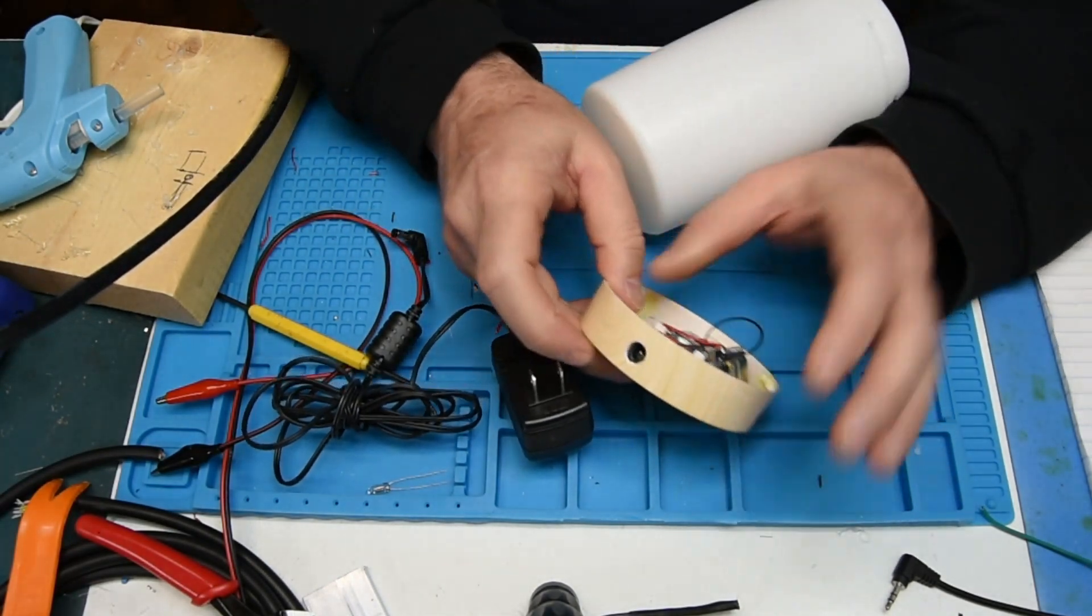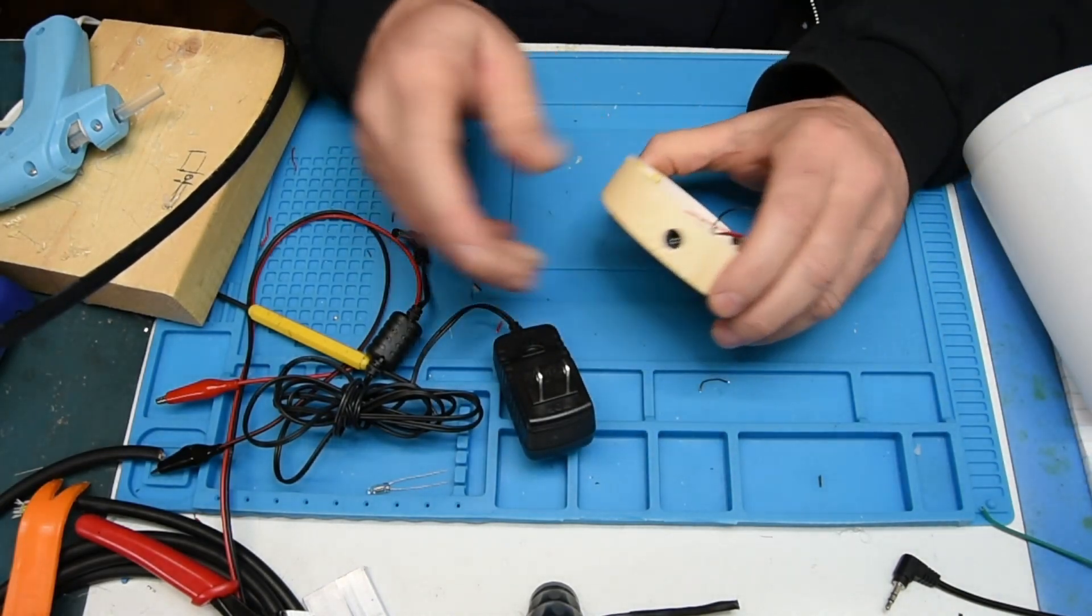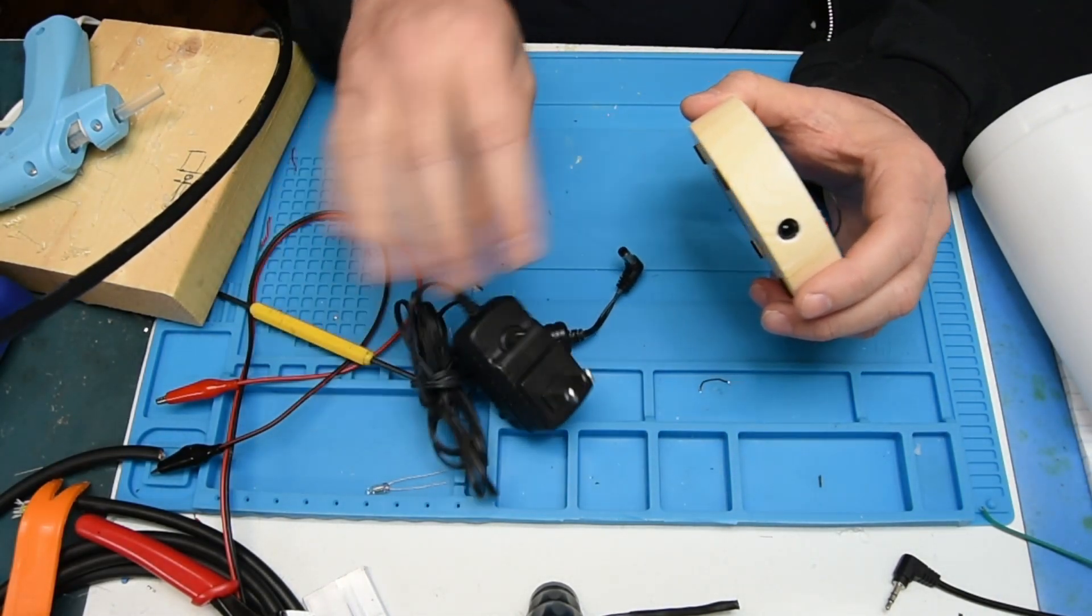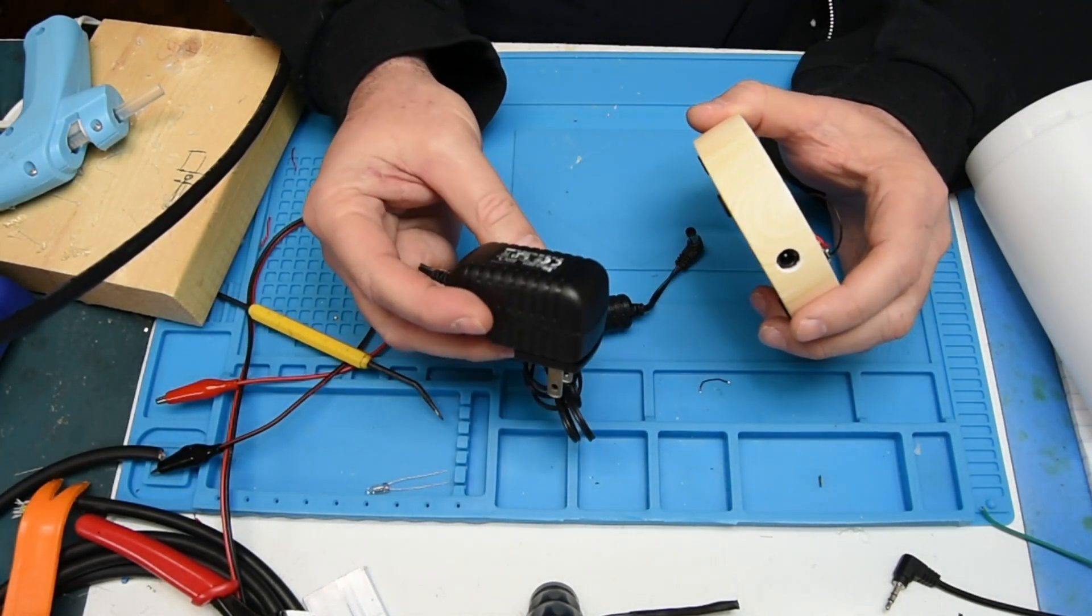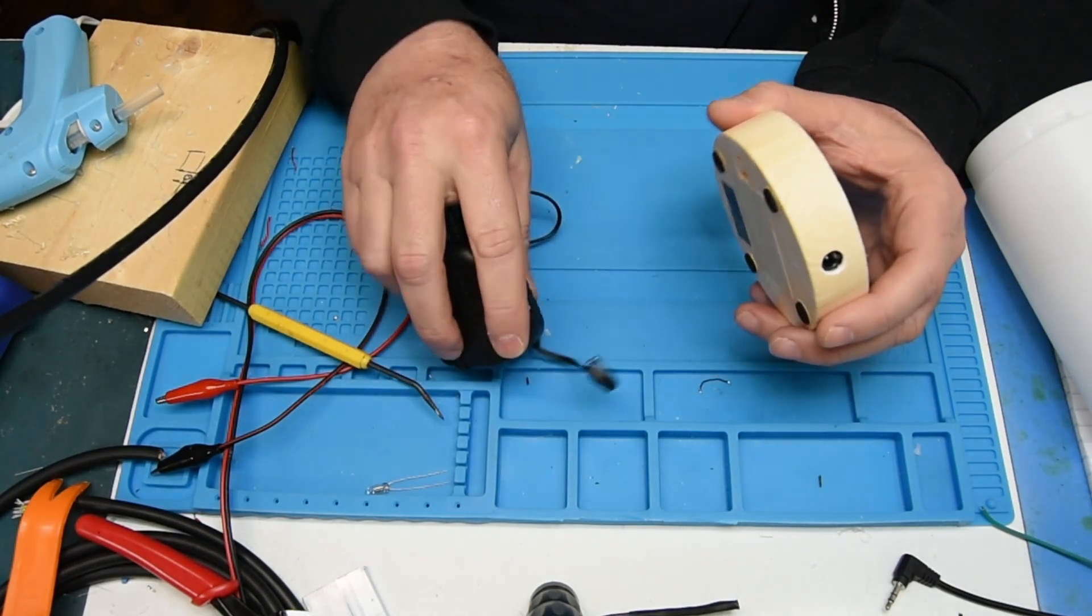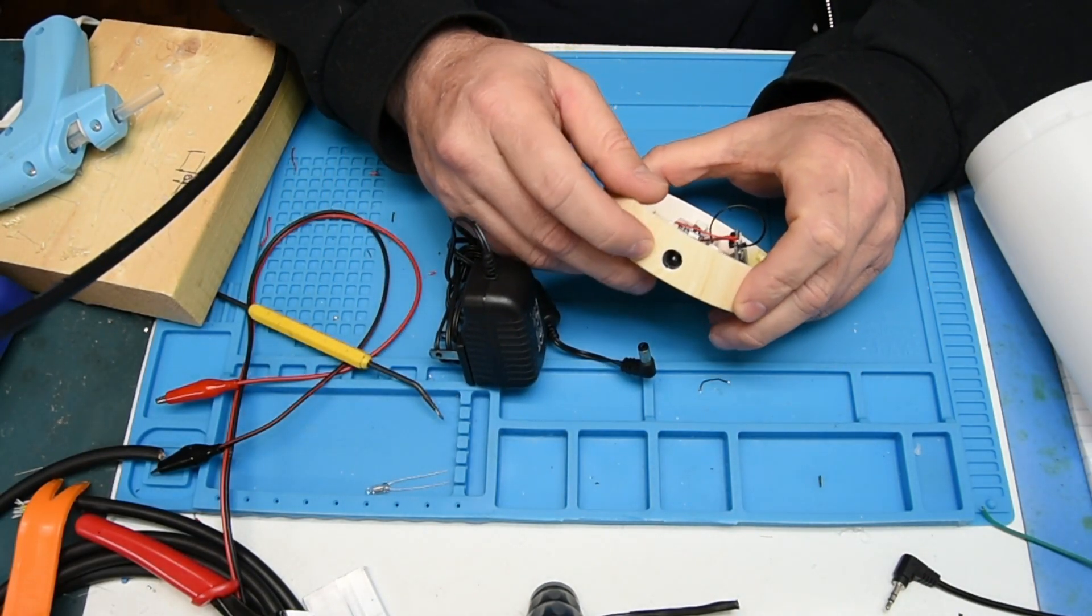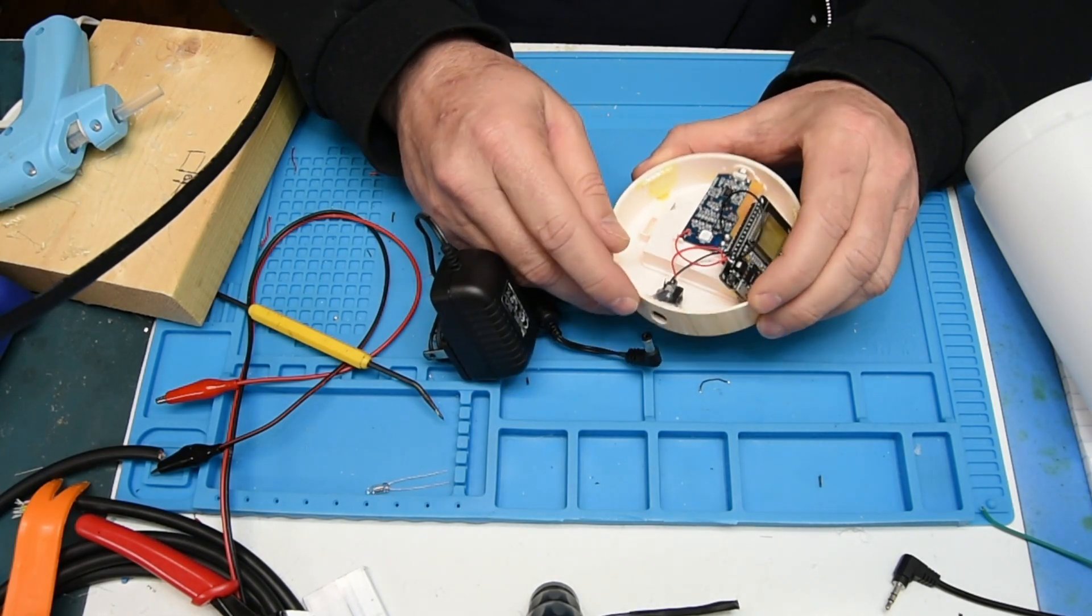So what I've done is I have installed a connector on the back. I had a five volt one amp wall wart, so I basically drilled a hole and installed it.